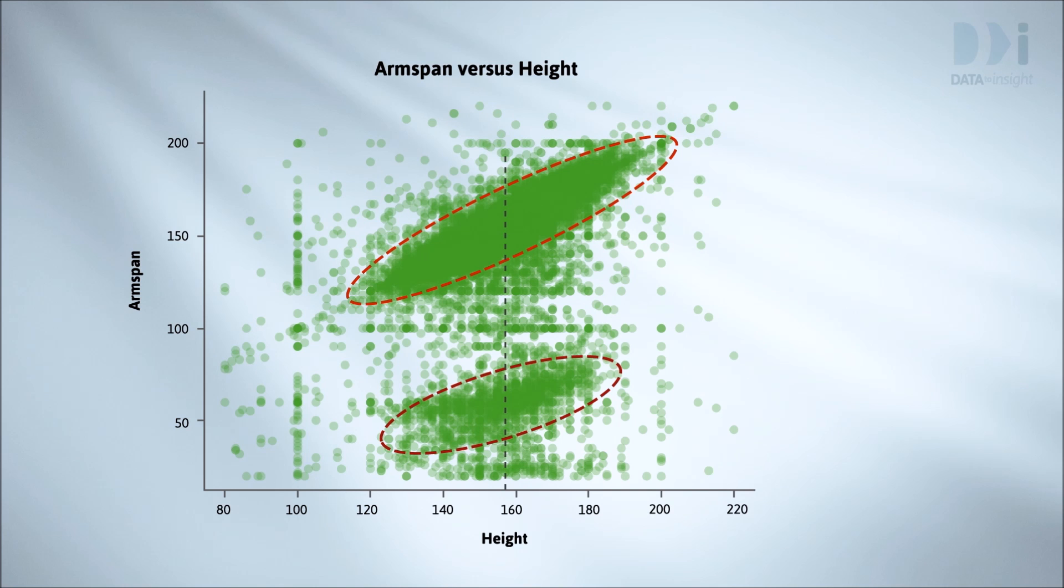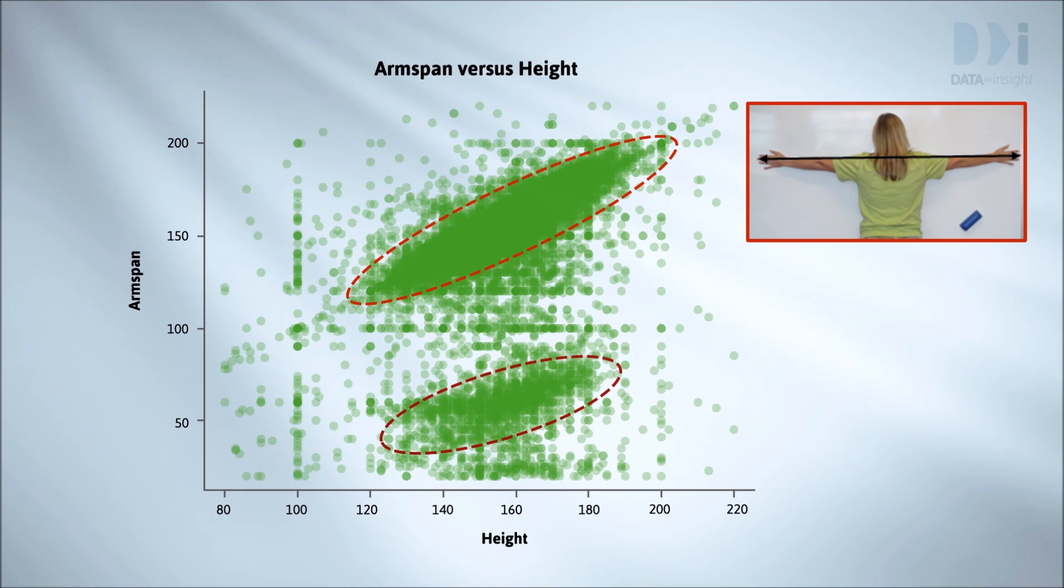Look at its centre. It's at roughly the same height value but half the arm span value of the main shape. What does that tell us? These children were doing half arm spans. Despite clear instructions to do whole arm spans, which included this photograph, they did this.